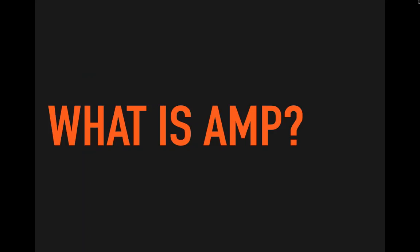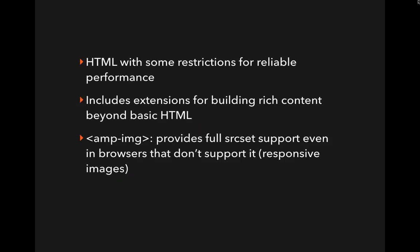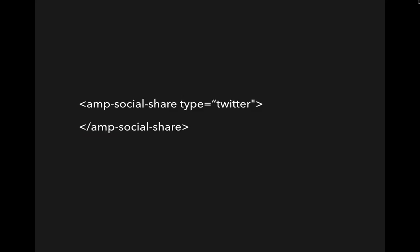So what is AMP exactly? It's an open-source initiative that aims to provide mobile-optimized content. It's a subset of HTML5, and there are three main sections: AMP HTML, AMP JavaScript, and the Google AMP Cache. AMP HTML is basically a subset of HTML with some restrictions for reliable performance, because AMP pages are all about speed. For example, it has its own tags like amp-img, the AMP image tag, which provides responsive image support for browsers that don't support it. They also have special components such as AMP social share, so you can add tags right into your page to share to Twitter and Facebook without having to code all of that yourself.